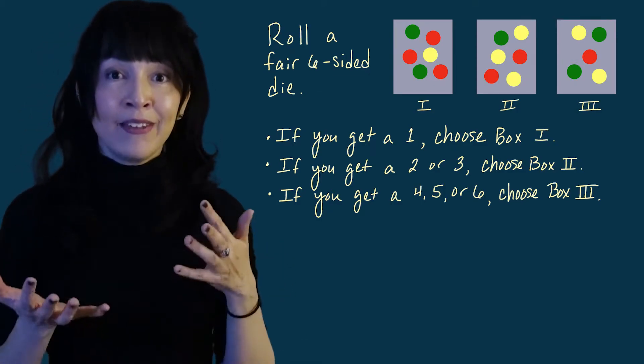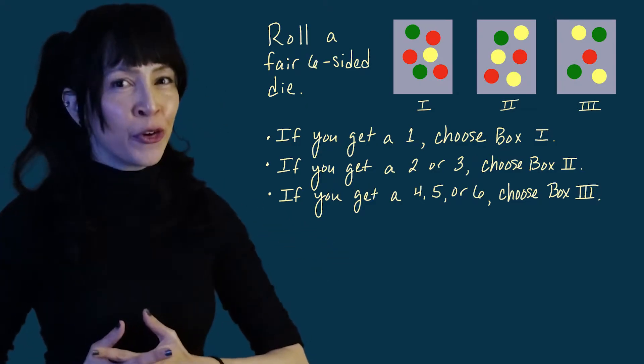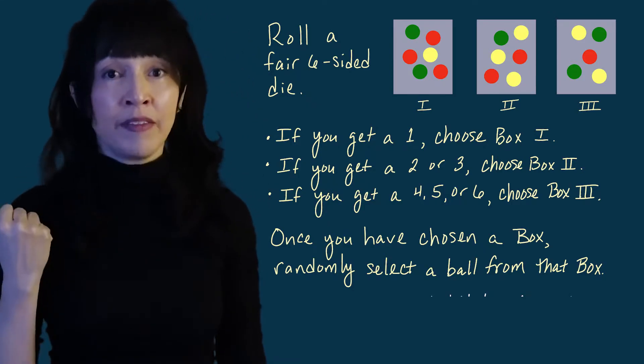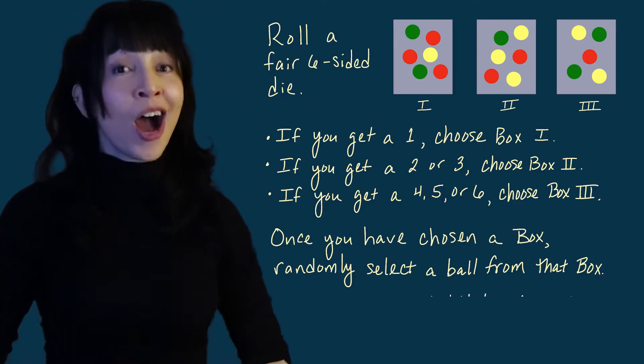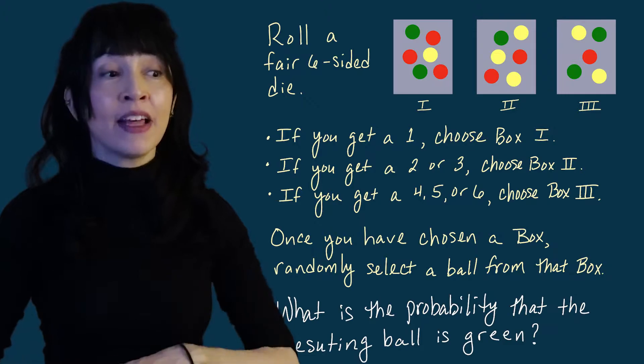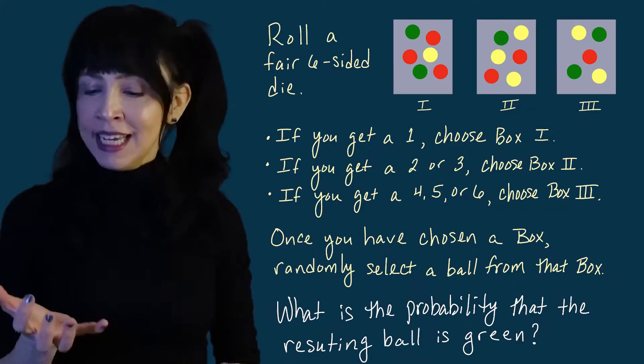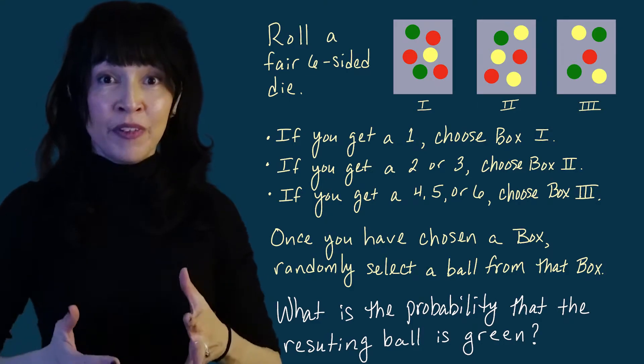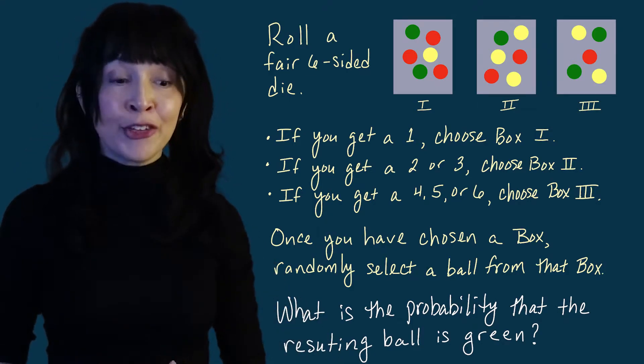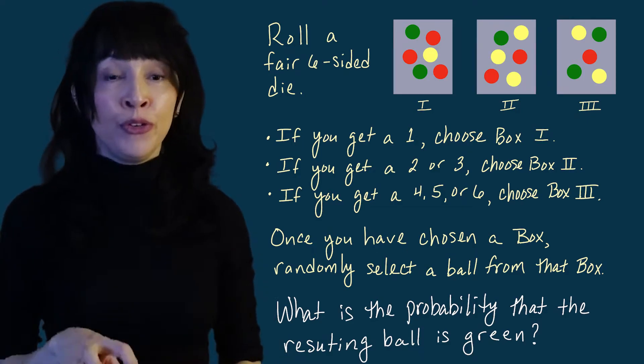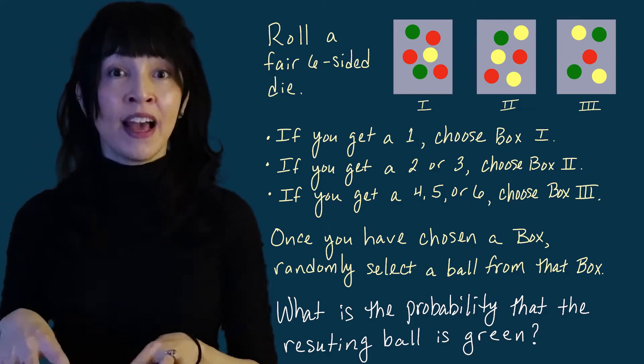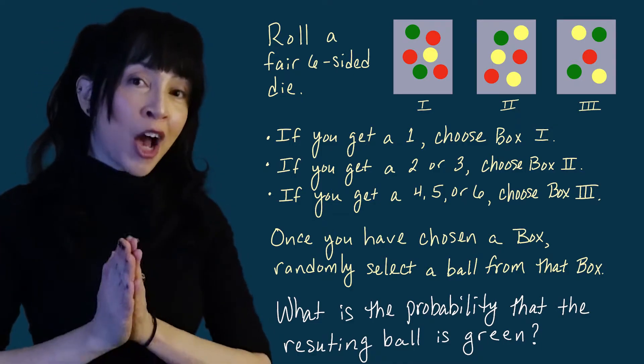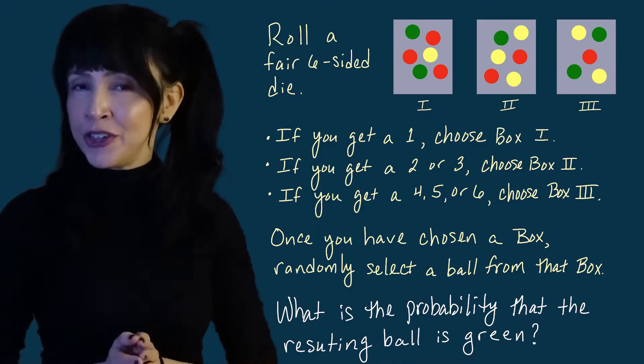Now, once I've selected a box or had the die select a box for me, I'm going to go into that box. I'm going to randomly grab a ball out of that box. And now I want to know what the probability that the result of this weird experiment is that we got a green ball. As before, we know this is easy to answer if we knew which box we drew the ball from, but the die is choosing that for us and I'm not really sure. So this sounds like a perfect opportunity to use conditional probability.